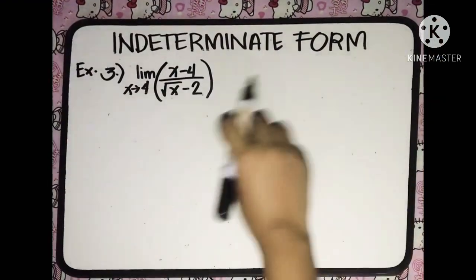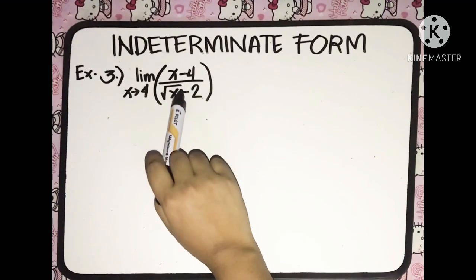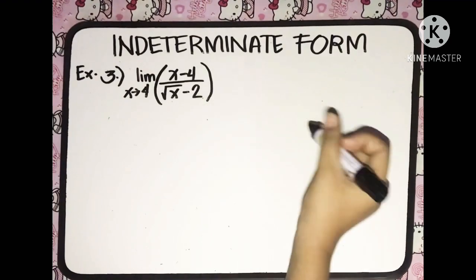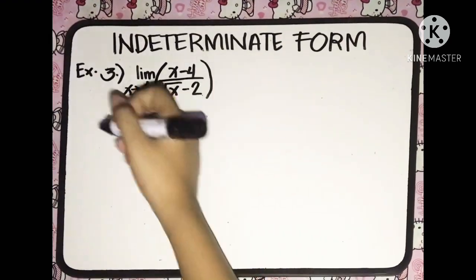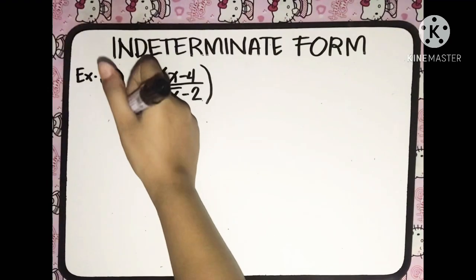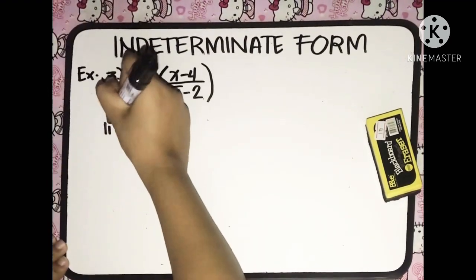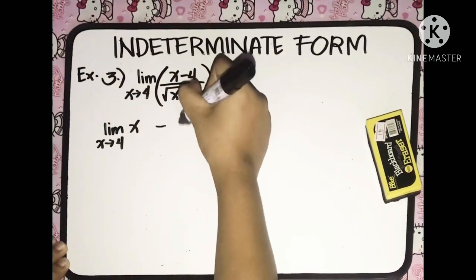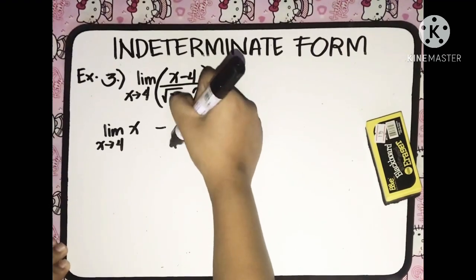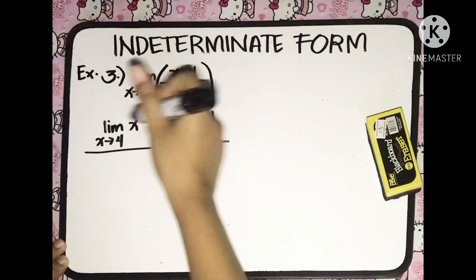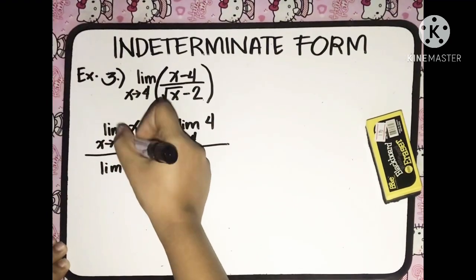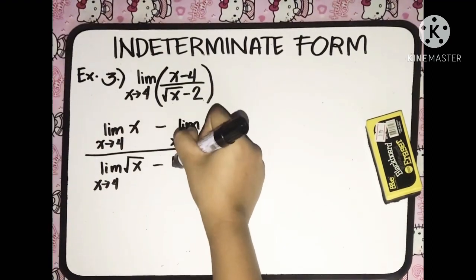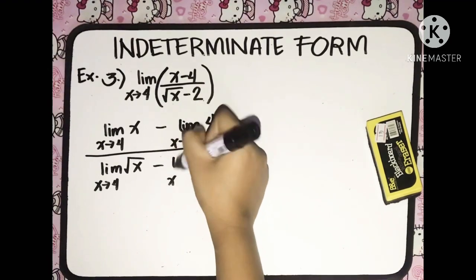Let's have the third example: the limit of (x minus 4) over (the square root of x minus 2) as x approaches 4. Distributing the limit, we have the limit of x as x approaches 4 minus the limit of 4, over the limit of the square root of x as x approaches 4 minus the limit of 2 as x approaches 4.